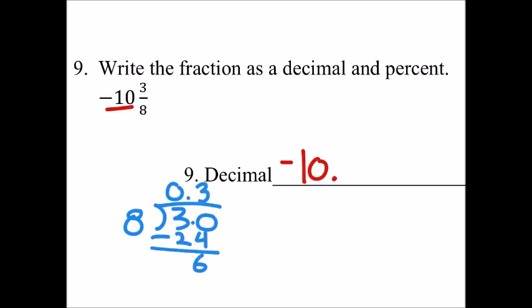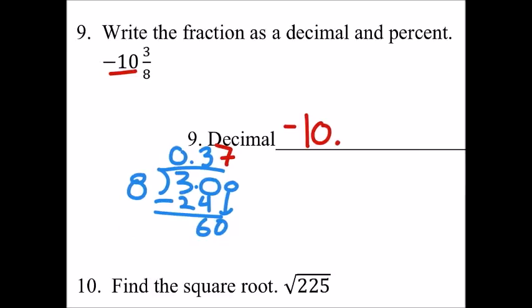Subtract. We've got a six. So we'll have to drop a zero. That goes into sixty seven times. So that gives us fifty-six. And we'll drop another zero. Eight goes into forty five times.